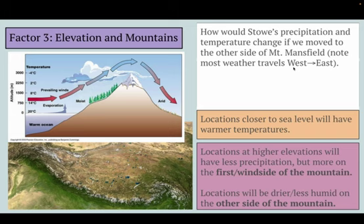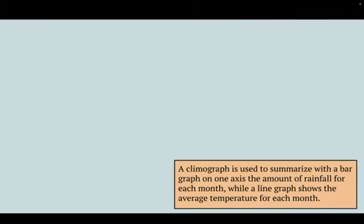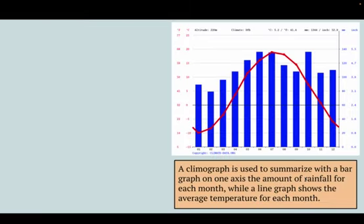So those are the three main factors you learned about today. For homework — or in class if you have extra time — for Friday, or for those looking at this on Tuesday, you're going to be making some climographs. A climograph summarizes two types of data: a bar graph showing average rainfall, either in millimeters or inches, for each month from January through December, and a line graph on the other axis showing the average daily temperature. This will help us understand which months are good or not good for plant and animal life.